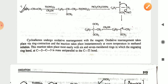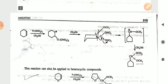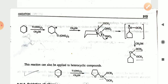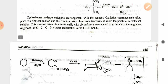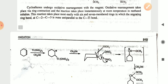Cycloalkenes can undergo oxidative rearrangement with this reaction. The oxidative rearrangement takes place via ring contraction at room temperature in methanol solution. This reaction takes place most easily with six- and seven-membered rings in which the migrating ring bond at C2–C3 is trans anti-parallel to the carbon–thallium bond.